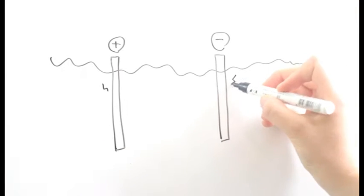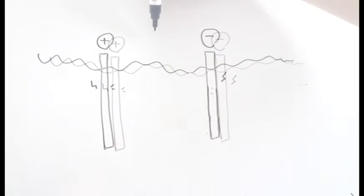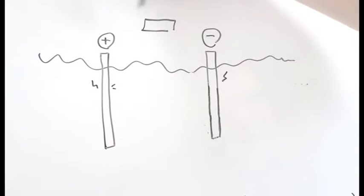Since this isn't a natural process, we provide energy to get the materials to do what we want them to do. So in the cells we work with, we provide energy to force these two materials to become an anode and cathode.